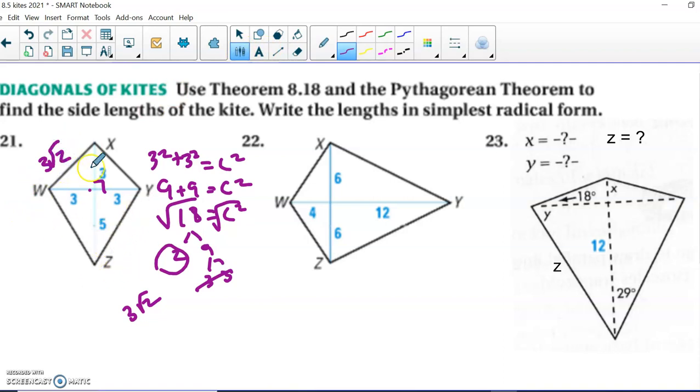And we could do the same thing for the other side lengths. We're going to say 3 squared plus 5 squared equals c squared. 9 plus 25 equals c squared. And that looks like that's going to be 34 equals c squared.